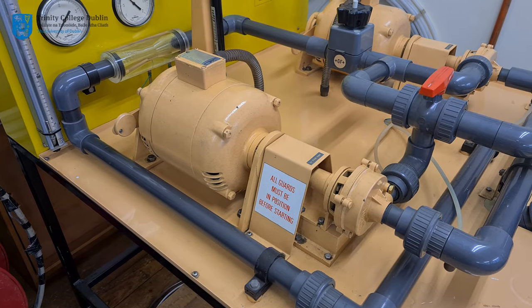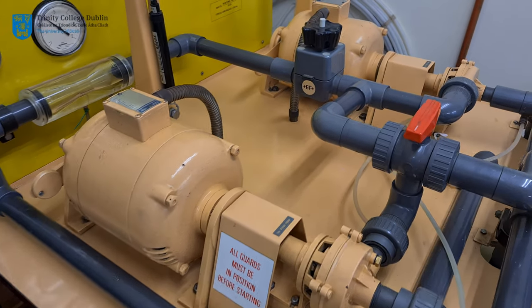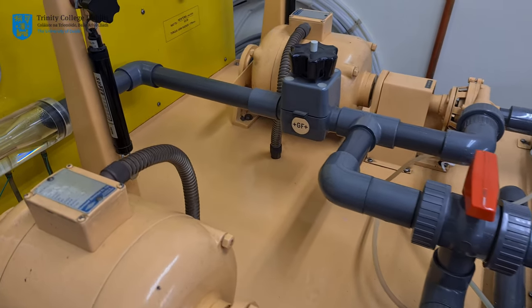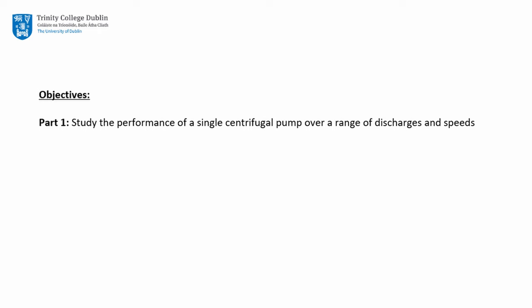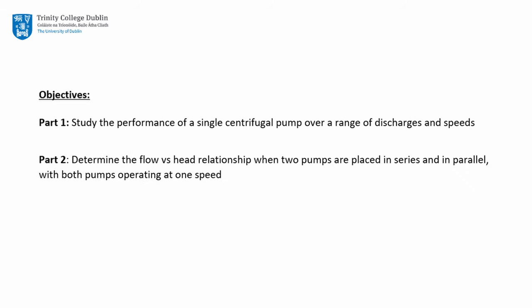In this video we will conduct three experiments in the hydraulics laboratory to assess the performance of a set of centrifugal pumps. The objectives are: 1. Study the performance of a single centrifugal pump over a range of discharges and speeds. 2. Determine the flow versus head relationship when two pumps are placed in series and in parallel, with both pumps operating at one speed. 3. Illustrate the effects of cavitation on the performance of a pump.